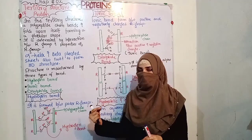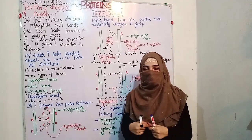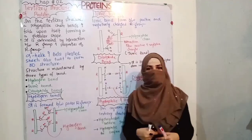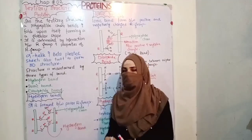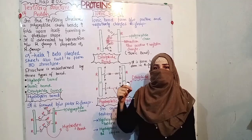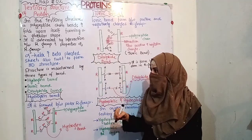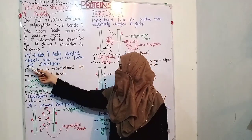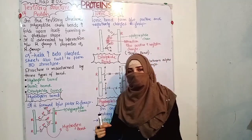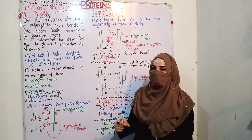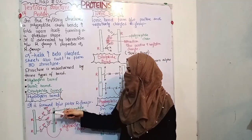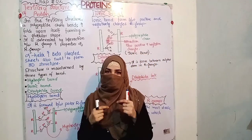The structure of the protein is basically determined by R groups. In amino acids, R groups vary, and the tertiary structure arises from these R group properties. Alpha helices and beta-pleated sheets are twisted to form the 3D structure. The tertiary structure is maintained by three types of bonds: hydrogen bond, ionic bond, and disulfide bond.